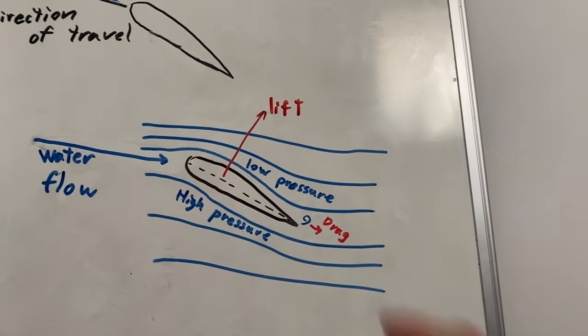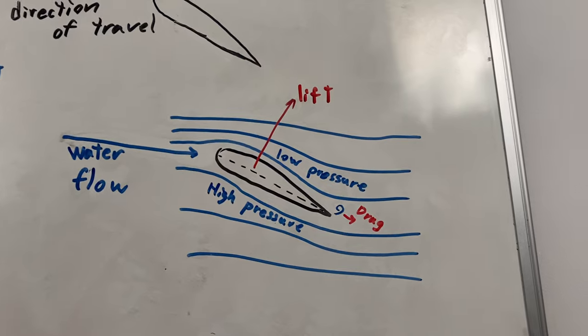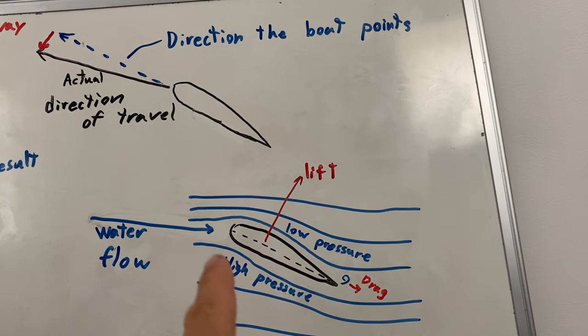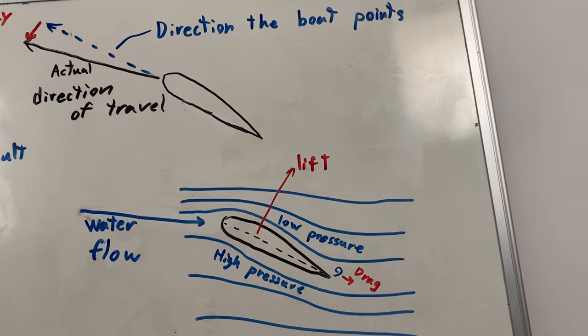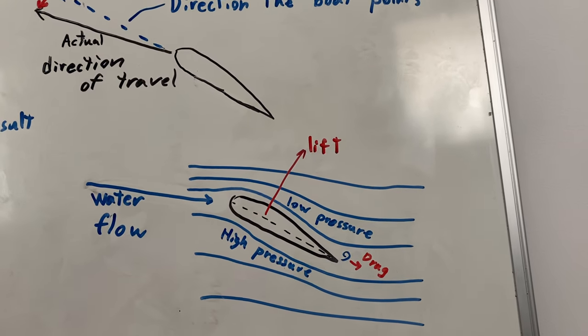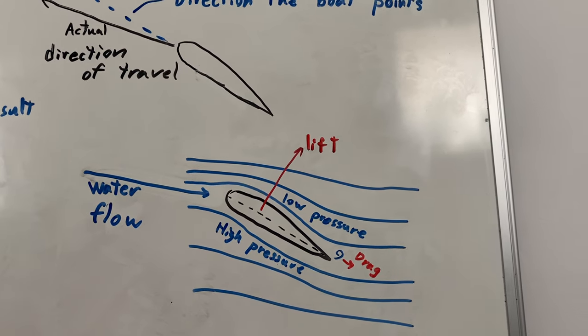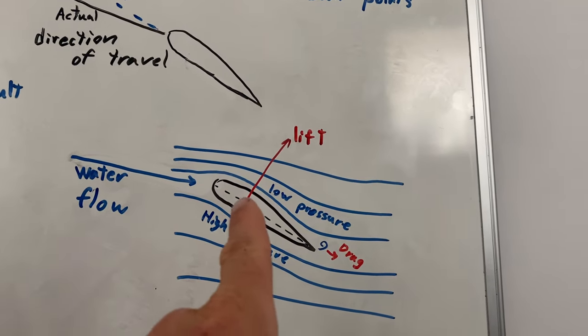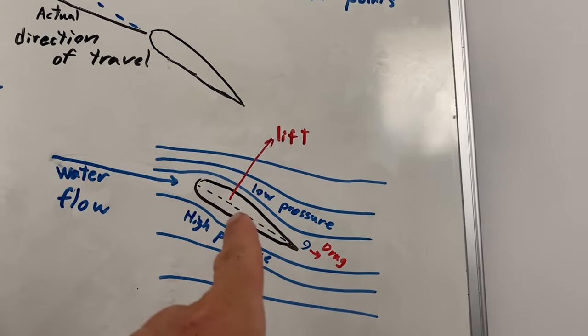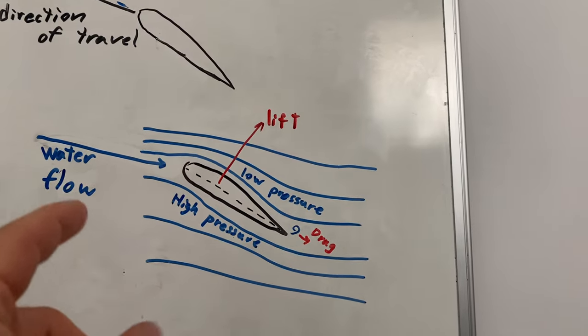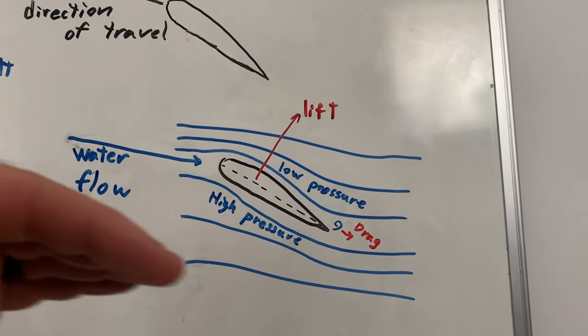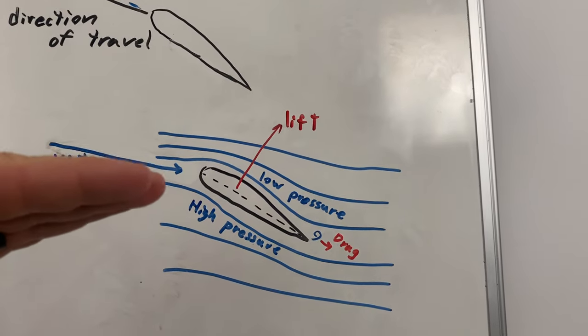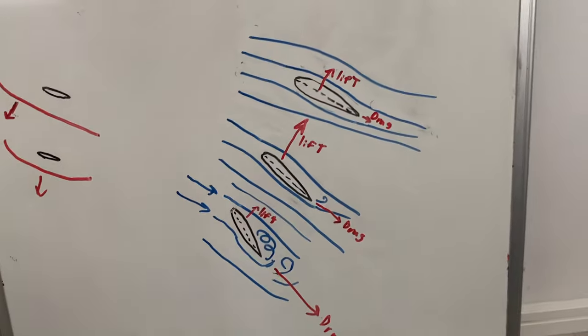So when you pull this centerboard diagonally through the water, and I should say this also applies to the rudder, you create high pressure on this side, low pressure on that side, and that's what's causing the centerboard to want to flip out that way. And of course, whenever there's lift, there's drag. So this angle of attack - on a laser, you can't change the shape of the centerboard. Obviously the centerboard stays the same shape. So the only way you can create lift is with this angle, this angle of attack of the water flow coming in. So the further you turn the angle of attack, the more lift you get, but you also get more drag.